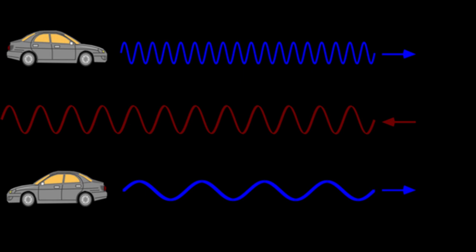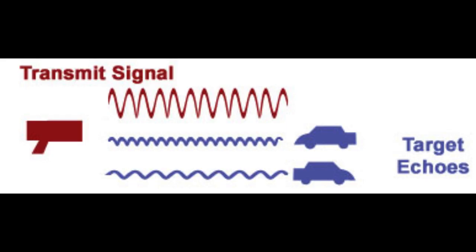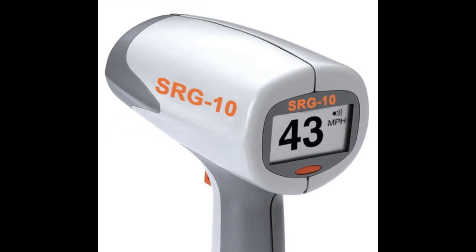The radar gun compares the frequency of the emitted radar waves with the frequency of the reflected waves. By measuring the difference between the two frequencies, the radar gun determines the speed of the vehicle.